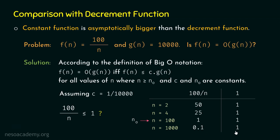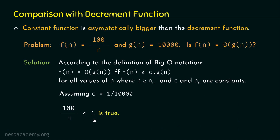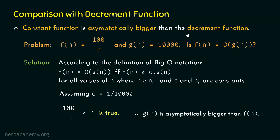We can say that n0 is equal to 100, because at that point f(n) equals c · g(n), and after that point f(n) is less than c · g(n), remaining less than c · g(n) as we take larger values of n. So we can say that 100/n is indeed less than or equal to 1, therefore g(n) is asymptotically bigger than f(n), meaning f(n) = Big-O of g(n). This means the constant function is asymptotically bigger than the decrement function. You can take any similar problem and verify this yourself.